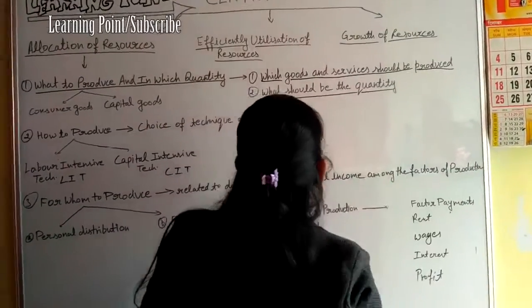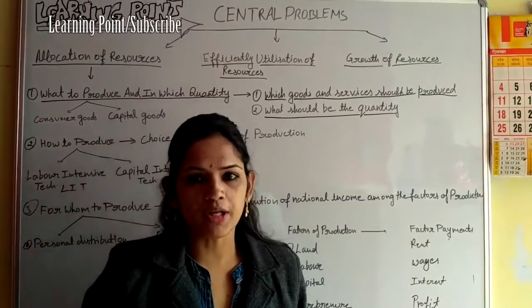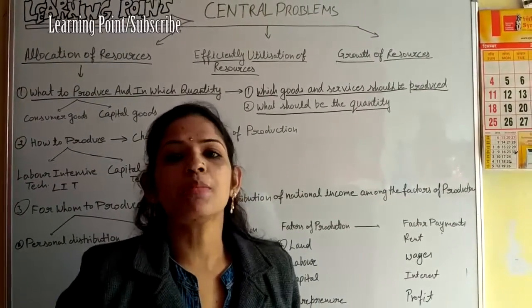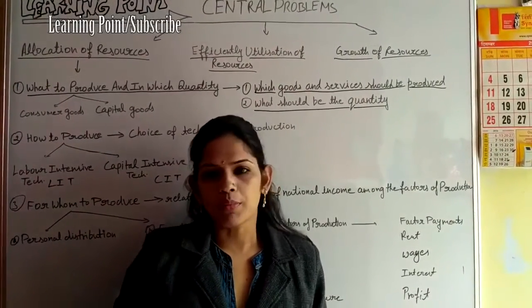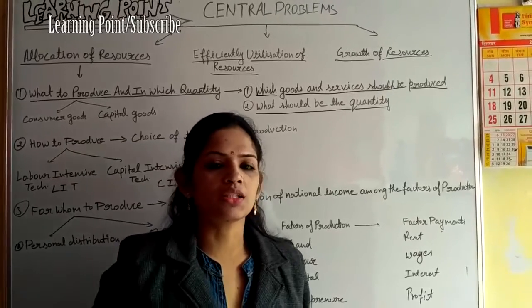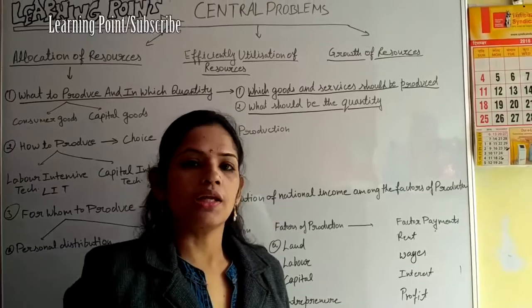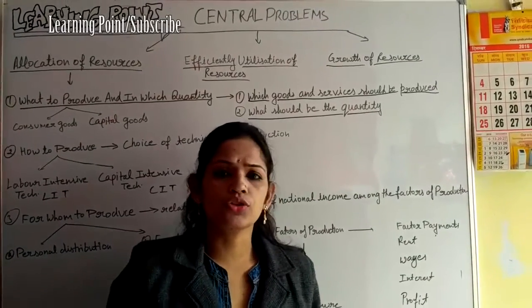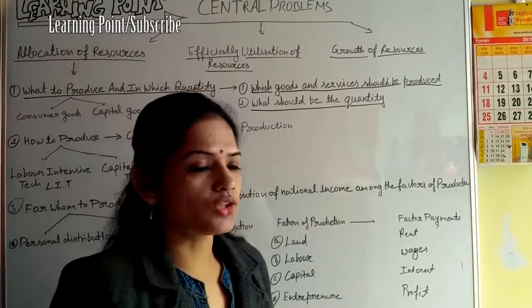Second, what should be the quantity produced? This depends on the size of the country's population and also on the structure of that population. For example, if the youth population is large, goods used by youth — like phones and bikes — need to be produced more. If the female population is larger, products used by females need to be produced more. So any economy must decide in what quantity goods are to be produced according to requirements.